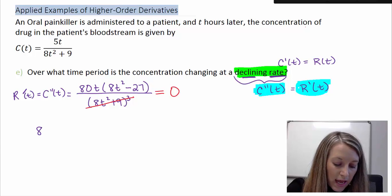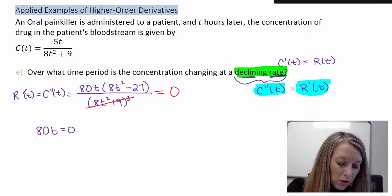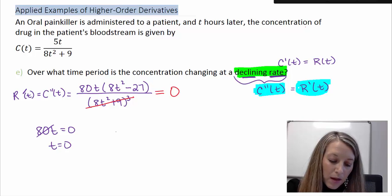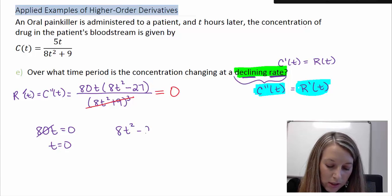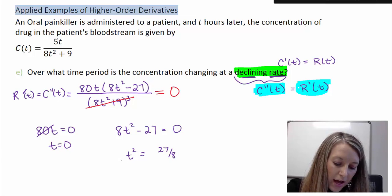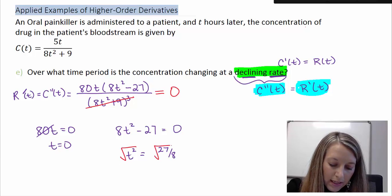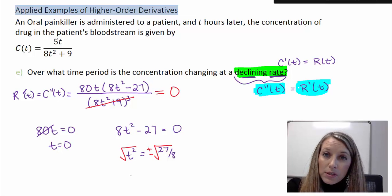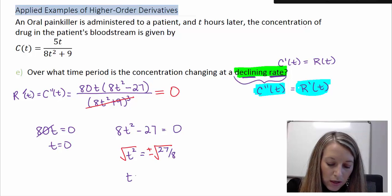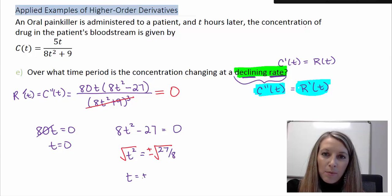The first one, when I set 80t is equal to zero, that gives me the solution t equals zero if I divide both sides by 80. The second one, 8t squared minus 27 equals zero. Isolating my t squared, that gives me 27 over 8. If I square root both sides, I need to force in a positive and a negative. But we're talking about time, so only the positive answer applies.